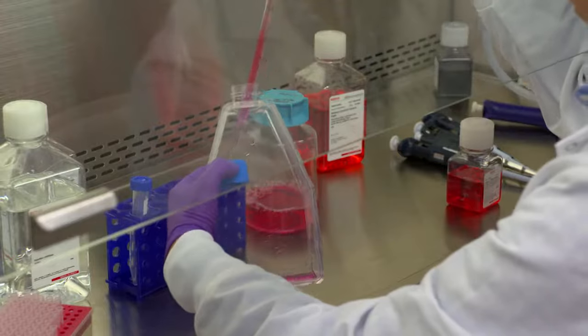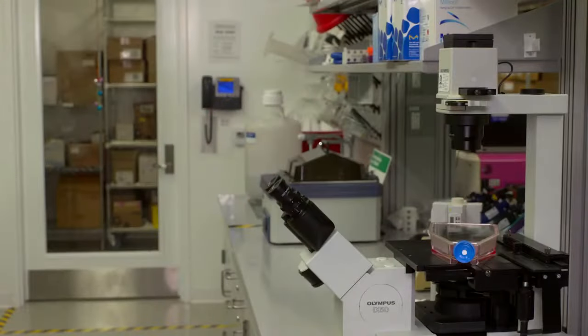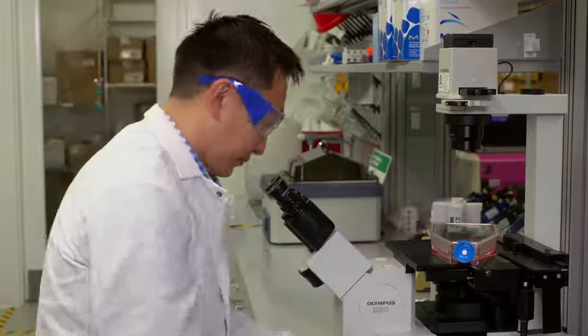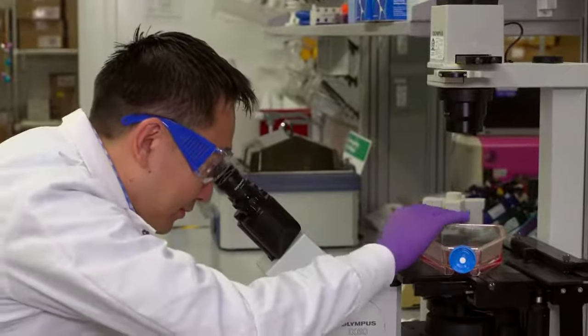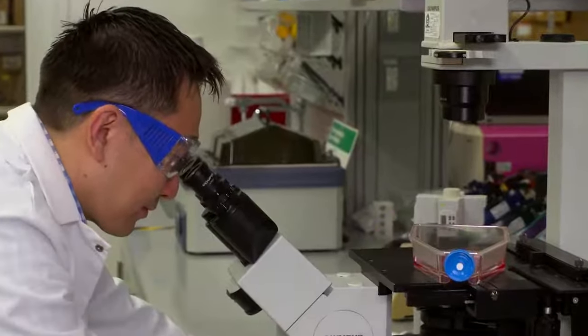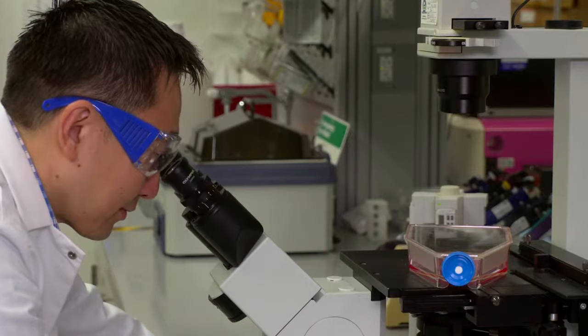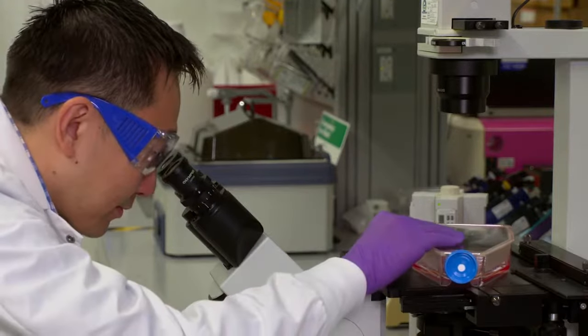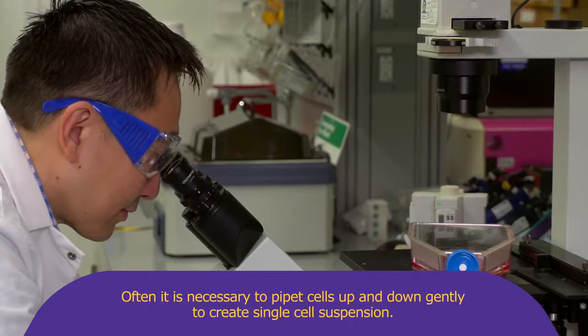Gently pipette up and down to break any cellular clumps. Examine the flask under microscope to ensure a single cell suspension has been achieved. In some cases, it may be difficult to obtain single cell suspension depending on cell type. In such cases, it will be difficult to obtain accurate cell counts. It is necessary to pipette cells up and down gently to create single cell suspension.